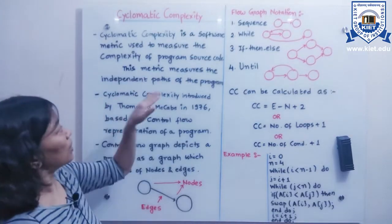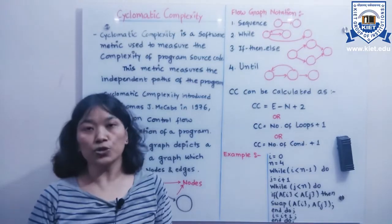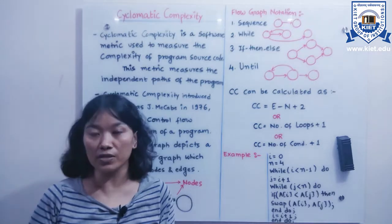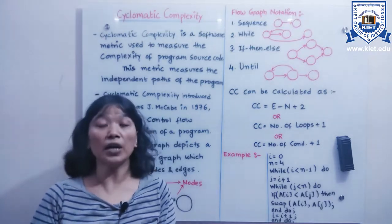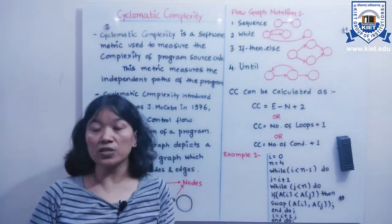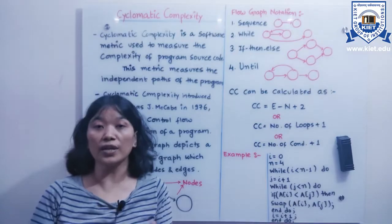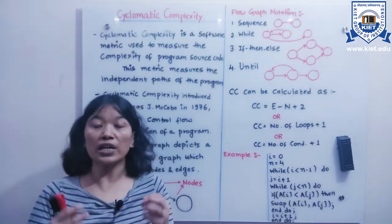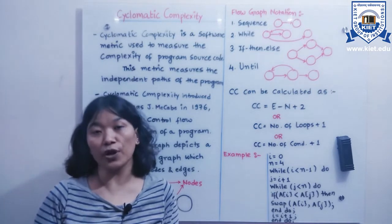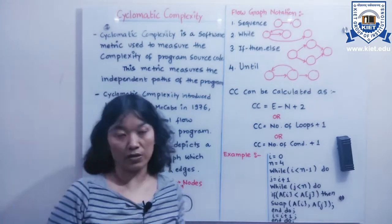This metric measures the independent parts of a program. Cyclomatic complexity helps us find out what the independent parts are. Independent parts are basically defined as those edges which do not get traversed. Every time we find a new untraversed edge, that means we have found an independent part.